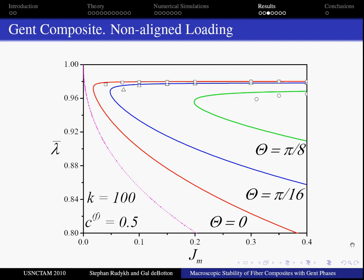And the critical stretches of the corresponding neohookean composites are the thin dashed curves. Again, we note that if a value of the locking parameter is big enough, the onset of failure in Gent composites can be sufficiently estimated by the results of neohookean composites.